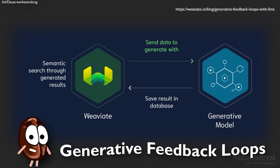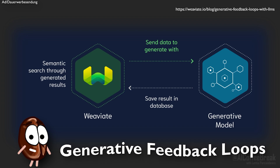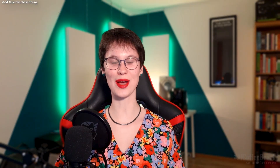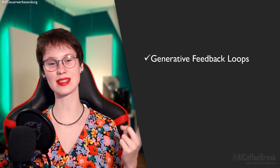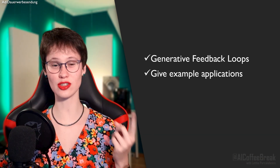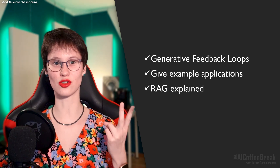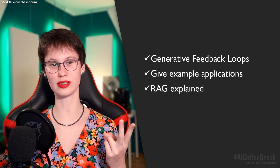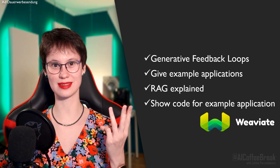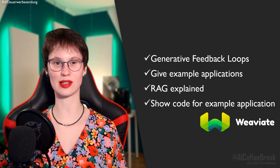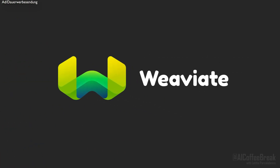This makes the generated data searchable in near real time, so you can retrieve them for future applications. In this video we will explain generative feedback loops, give examples of applications which require storing generated outputs, explain RAG for context, and show some code for a concrete example using our sponsor Weaviate to create custom listings based on user preferences.